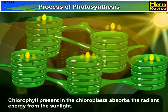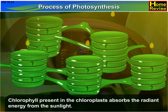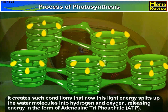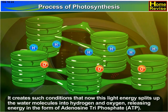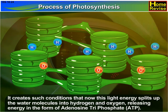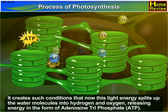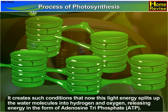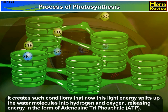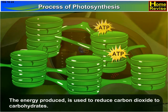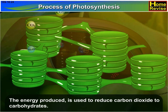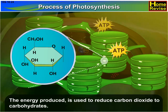Chlorophyll present in the chloroplast absorbs the radiant energy from the sunlight. It creates such conditions that this light energy splits up the water molecules into hydrogen and oxygen, releasing energy in the form of adenosine triphosphate or ATP. The energy produced is used to reduce carbon dioxide to carbohydrates.